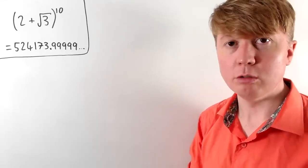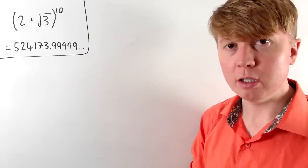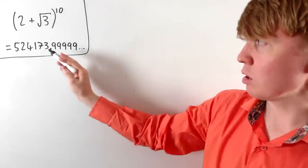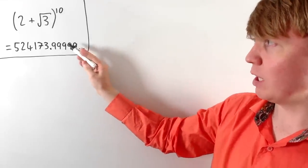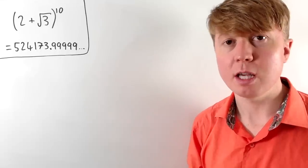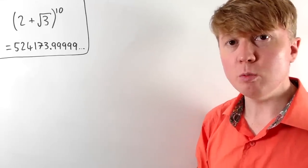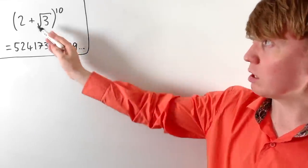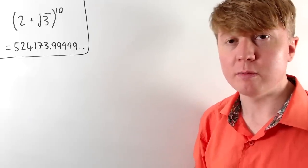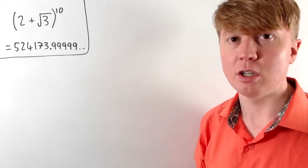2 plus root 3, all raised to the power of 10, is really, really close to being an integer. We get five nines after the decimal point, so it's very, very close to being this integer. And this seems really weird, because why should this irrational number raised to the power of 10 give us something that's really, really close to being an integer?